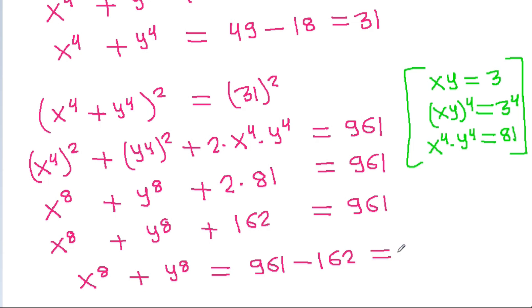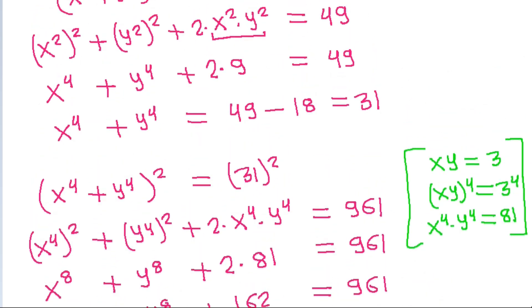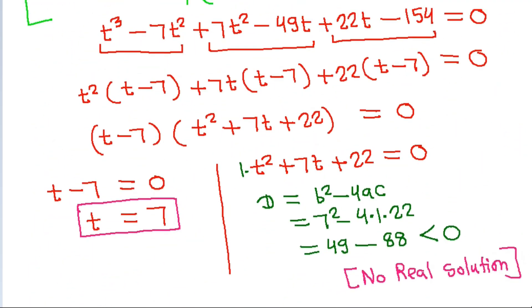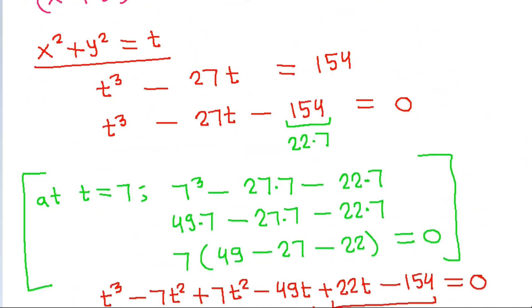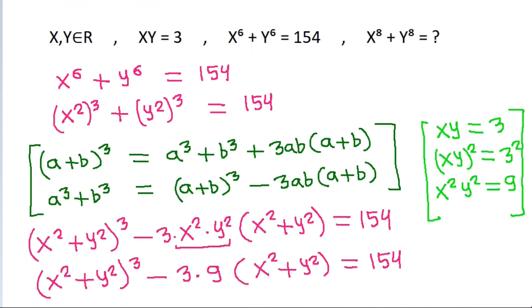Therefore x power 8 plus y power 8 equals 961 minus 2 times 81 equals 961 minus 162, that is equal to 799.